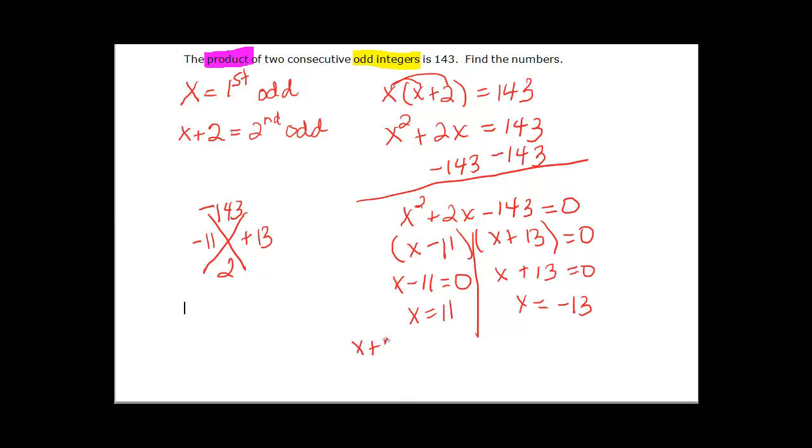And now we want to know what X is but what would X plus 2 be? Well if we take 11 and add 2 it will give us 13. And if we take negative 13 and add 2 then we should get a negative 11.